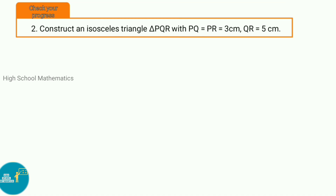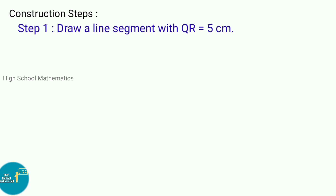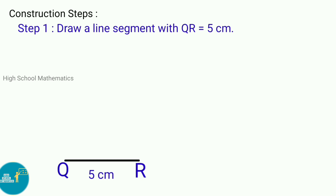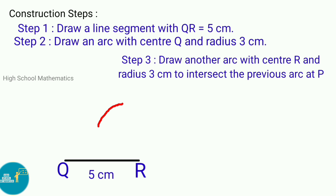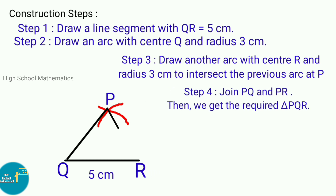Check your progress, second sum: Construct an isosceles triangle PQR with PQ equal to PR equal to 3 cm and QR equal to 5 cm. Construction steps — Step 1: Draw a line segment with QR equal to 5 cm. Step 2: Draw an arc with center Q and radius 3 cm. Step 3: Draw another arc with center R and radius 3 cm to intersect the previous arc at P. Step 4: Join PQ and PR. Then we get the required triangle PQR.